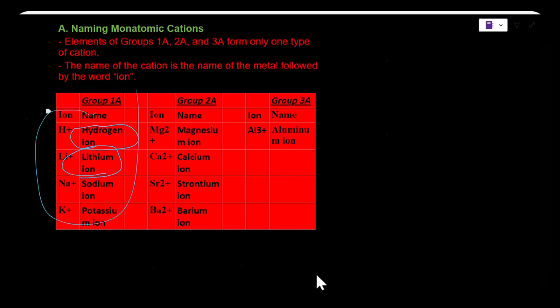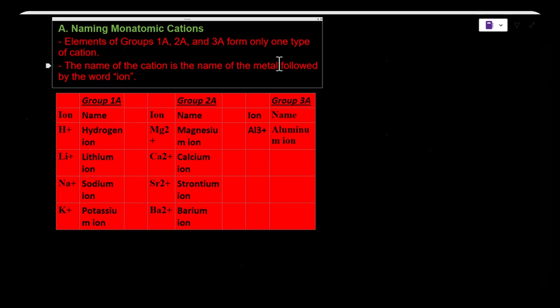For group 2 it would be the same thing: magnesium ion, calcium ion. And for aluminum it would be aluminum ion. The ions can only form one charge, so the naming system does not need to be complex.